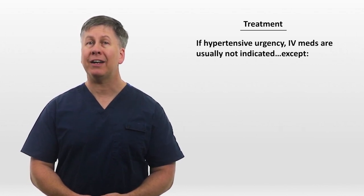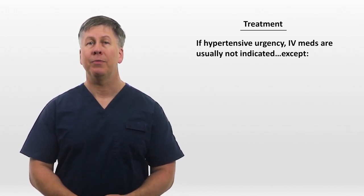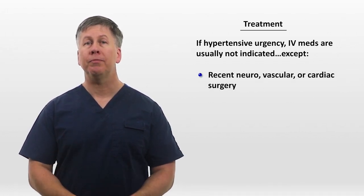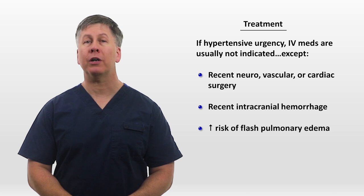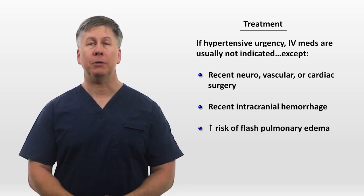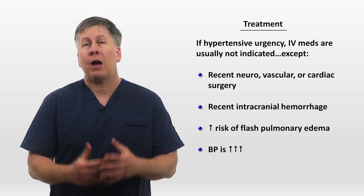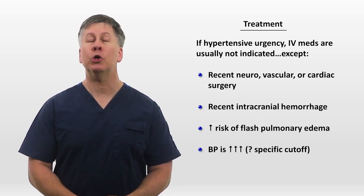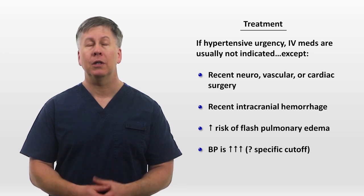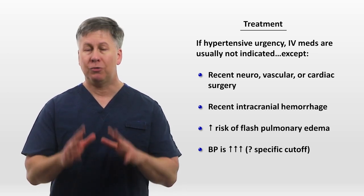If you do decide to actively treat hypertensive urgency, intravenous meds are usually not indicated, but there are several notable exceptions in which more aggressive blood pressure lowering is indicated. For example, recent neurovascular or cardiac surgery, recent intracranial hemorrhage, patients who are at a high risk of developing flash pulmonary edema such as patients with severe mitral regurgitation, and patients with truly profound elevations of blood pressure. I wish I could give a specific cutoff here, but as far as I know, there is no good data on what blood pressure is high enough to warrant emergent lowering despite an absence of symptoms. But whatever it would be, it would be highly unusual — not just a systolic pressure of 180 or 200, something higher than that.